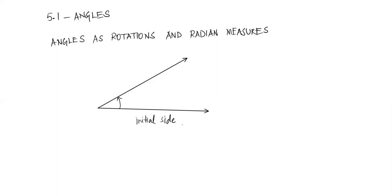The initial side is the first ray. When you span that angle, your other ray — where the angle ends — is called the terminal side. Terminal means where it terminates. These two rays will have a common endpoint, and this endpoint is called the vertex. We always talk about the initial side and the terminal side when it comes to angles.